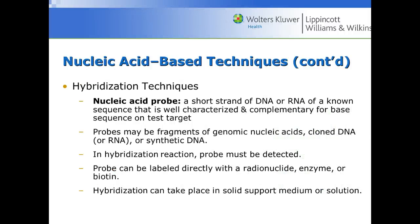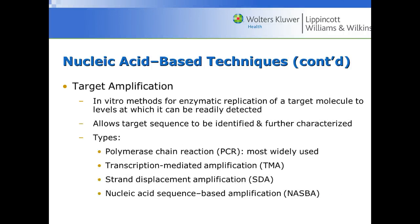We have hybridization techniques using nucleic acid probes — these allow for quicker testing. A nucleic acid probe is a short strand of DNA or RNA of a known sequence looking for a test target. One of the tests we used to do was gonorrhea and chlamydia. This test would use a probe to look for a specific sequence that's only found on the chlamydia or gonorrhea bacteria. If the probe anneals to it, a reaction takes place that we can detect to determine if it's positive or negative. It's more specific than, say, an immunoassay.